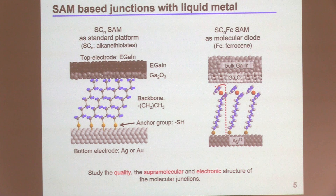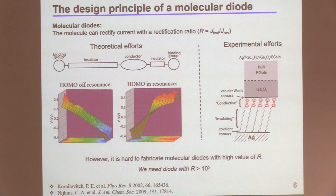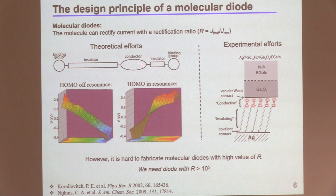So why do we use this design? Why make it asymmetric? That is the design principle for our molecular diode. We need to generate asymmetry in our molecules. In theory, we can separate our molecule into different components: insulator, conductor, insulator. If we place the conductor asymmetrically inside the backbone of the SAM, the conductor provides a molecular orbital — for ferrocene it's the HOMO — which can be off-resonance or in-resonance with different bias directions. In practice, the conductive part is the ferrocene, and the insulating part is the alkyl chain.